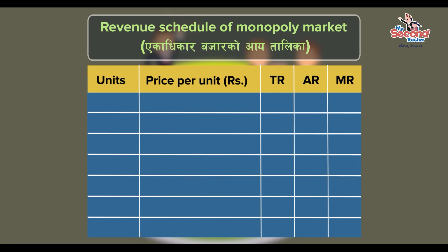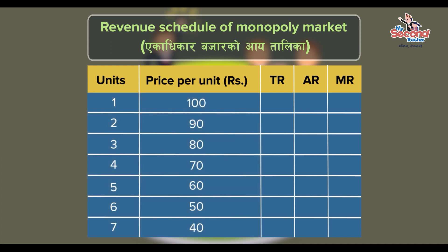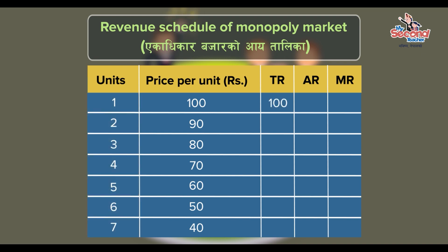MoMo's quantity sold is one, two, three, four, five, six, seven plates. Price is 100, 90, 80, 70, 60, 50, and 40 rupees. Total revenue is calculated by multiplying quantity sold by the respective price, giving: 100, 180, 240, 280, 300, 300, and 280 rupees.